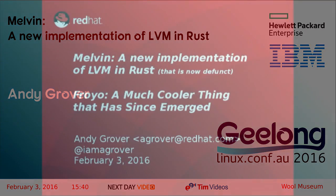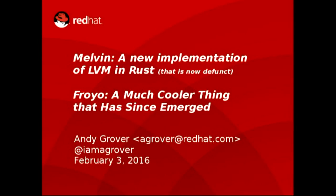Hi everybody. Welcome to our last session for the day at the Wool Museum. We have Andy Grover here from Red Hat, all the way over from Portland, and his talk is Melvin, a new implementation of LVM in Rust.